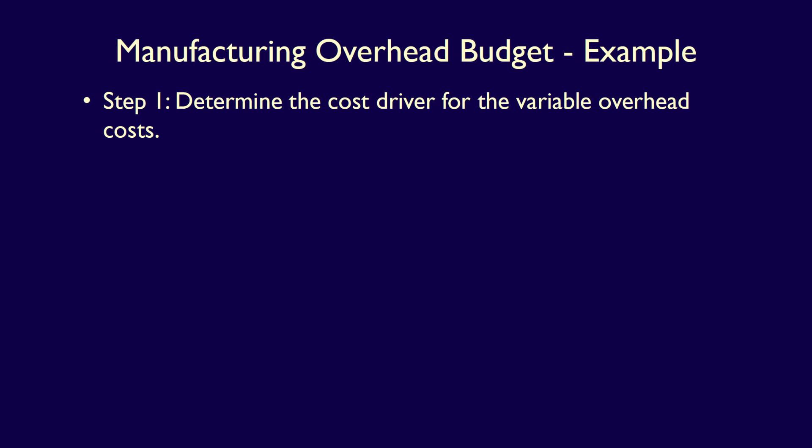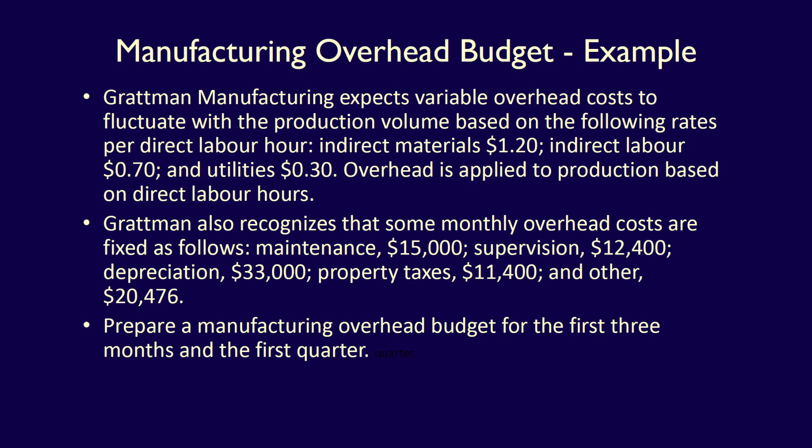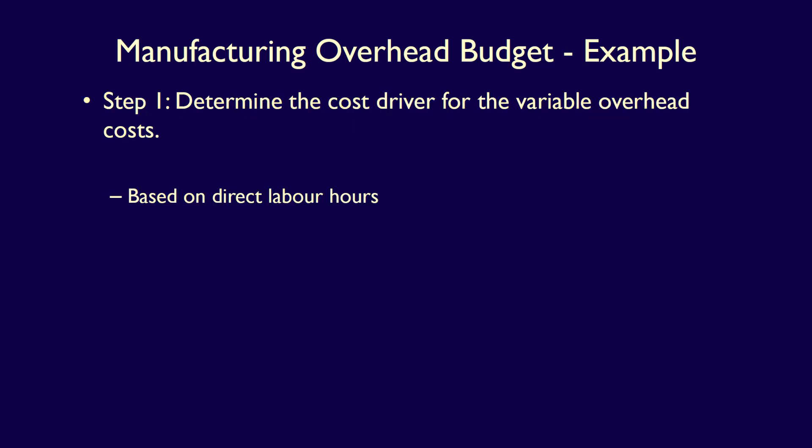Step one is to determine the cost driver for the variable overhead costs. The cost driver is the independent variable which causes the variable costs to change. As the independent variable increases, the variable costs increase, and as it decreases, variable costs decrease. The cost driver can be machine hours, direct labour hours, direct labour costs, or units produced. To determine this, we go back to the question. Gratman Manufacturing expects variable overhead costs to fluctuate with production volume, based on rates per direct labour hour, and overhead is applied to production based on direct labour hours. So we know to use direct labour hours as the cost driver.